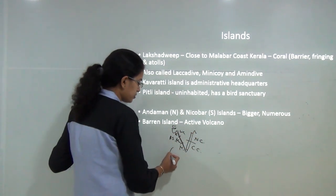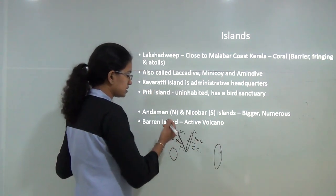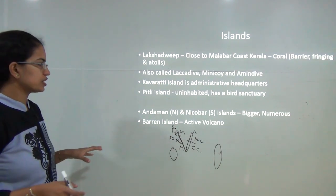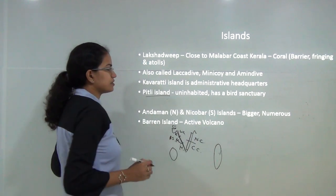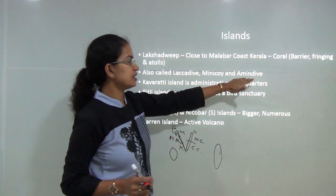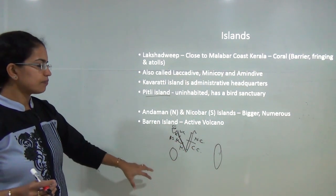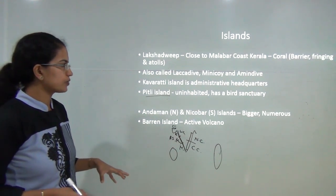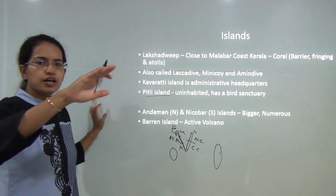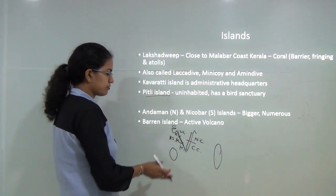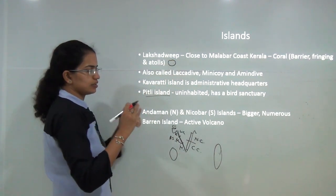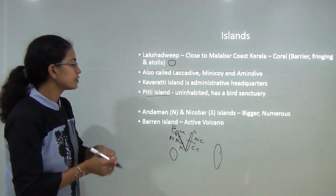Moving to the two island groups: the one towards the west is Lakshadweep. Kavaratti is its capital and administrative headquarters. Pitti island is one of the islands in Lakshadweep — uninhabited but with a bird sanctuary. The previous names of Lakshadweep were Laccadive, Minicoy, and Amindivi. It lies close to the Malabar coast of Kerala and is known for coral reefs. The most famous coral reefs in the world are the Great Barrier Reef on the coast of Queensland, Australia. In Lakshadweep you mainly find fringing and barrier reefs. Atolls are circular coral formations with a water body within.